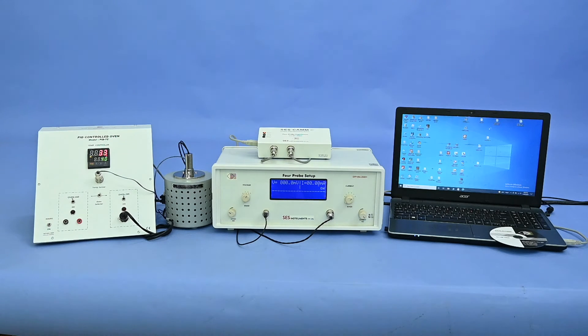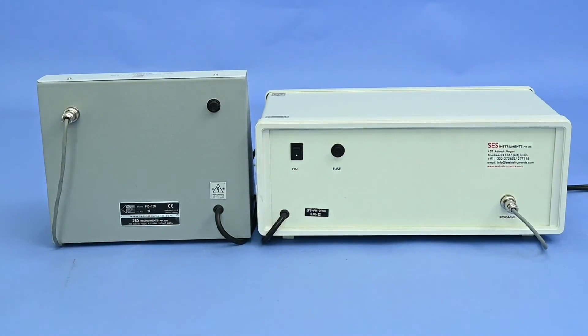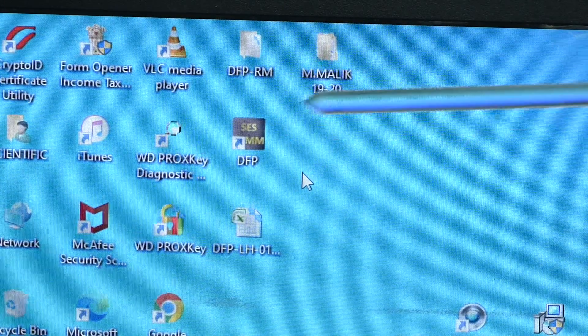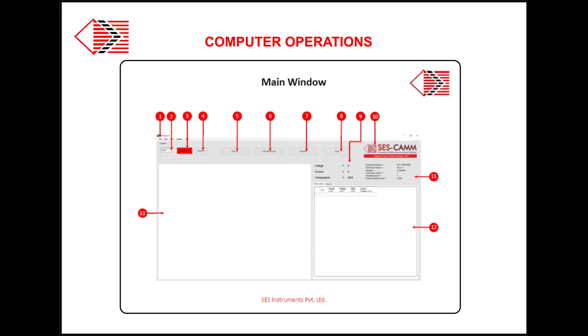If you have ordered DFP-RM-200-NC model, your package will also contain SESCAM with software CD, USB cable, and leads to connect the SESCAM with the main unit and computer. Make all connections with the given leads having their own connectors from main unit to computer using the supplied interface unit. Install the software. Before starting the experiment, open the help line and read it carefully step by step.